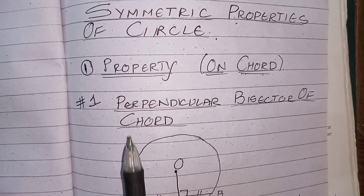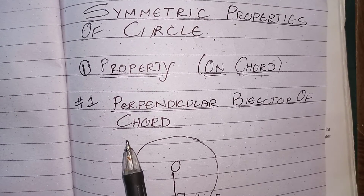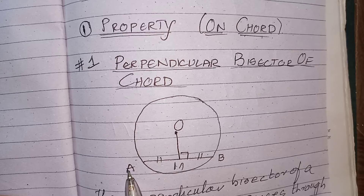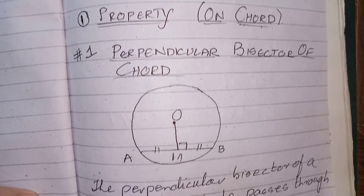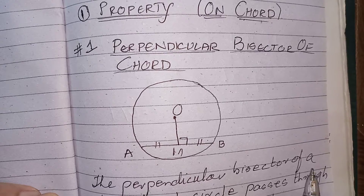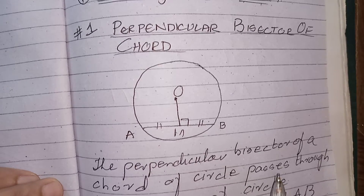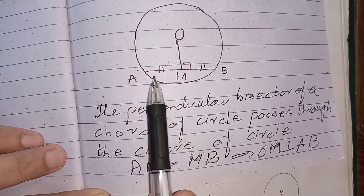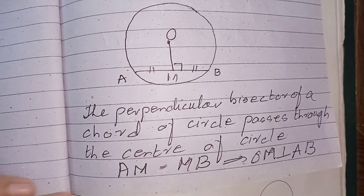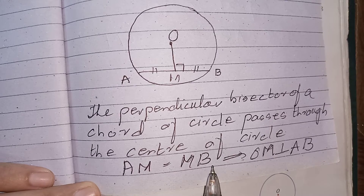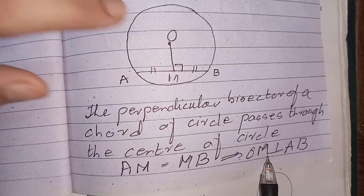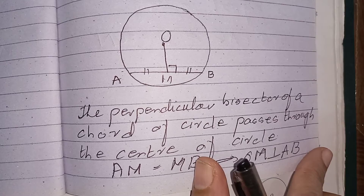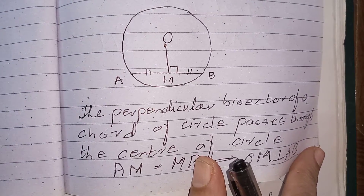Property number 1 is the perpendicular bisector of a chord. If we consider a circle where O is the centre and AB is a chord, the perpendicular bisector of a chord passes through the centre of the circle and divides the chord into 2 equal parts. For example, AM equals MB when OM is perpendicular to chord AB.